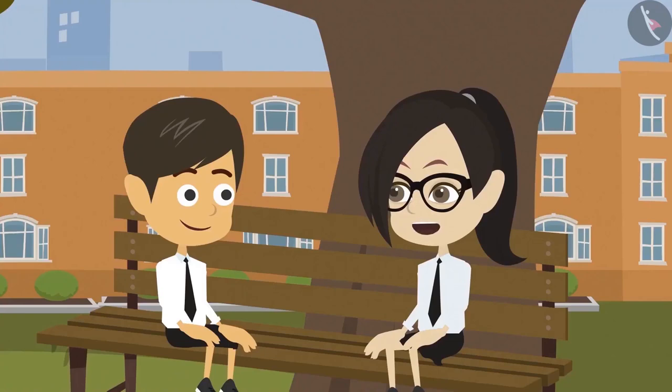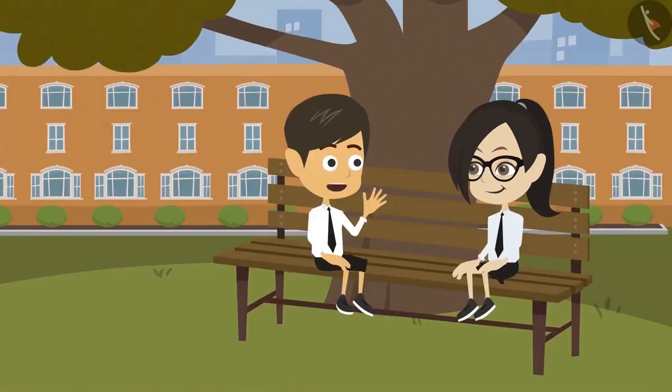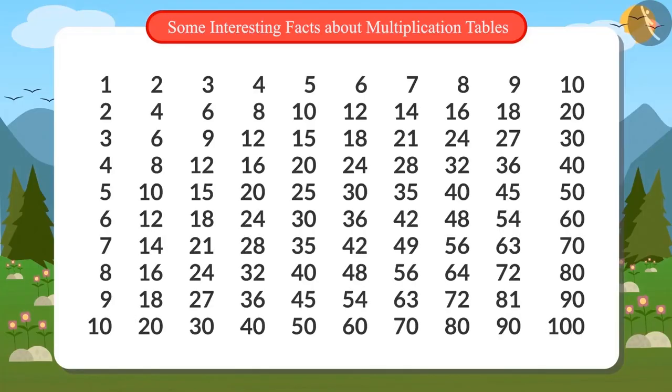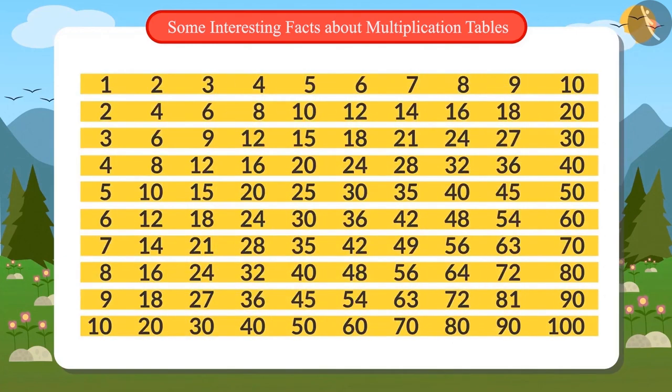Do you also know some other interesting things about other tables too, Rayansh? Look, these are tables from 1 to 10. Look, if the number line is read from left to right, it shows a special table.